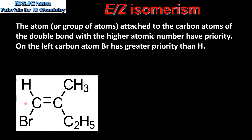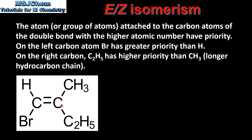If we look at the carbon atom on the left, bromine has a higher atomic number than hydrogen, therefore bromine has greater priority. If we look at the carbon atom on the right, C2H5 has higher priority than CH3 because it's the longer hydrocarbon chain.